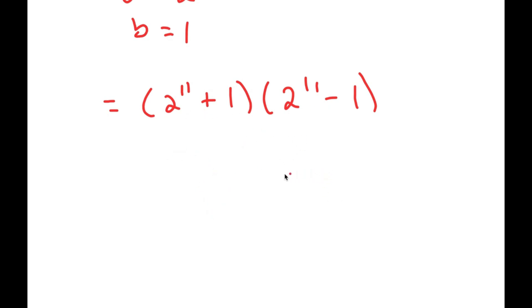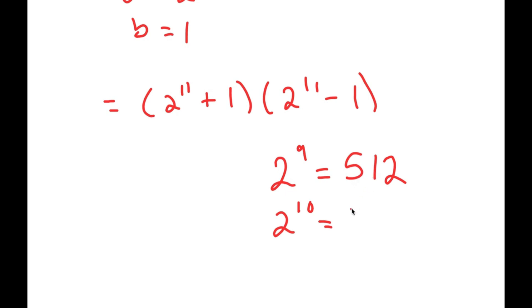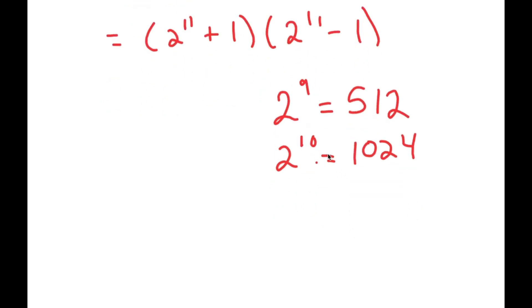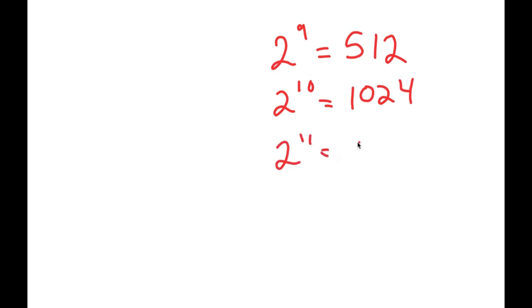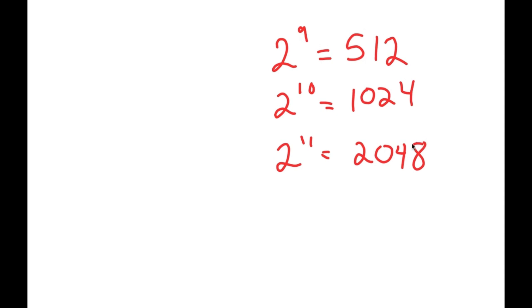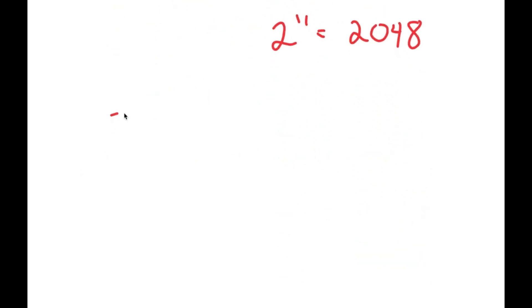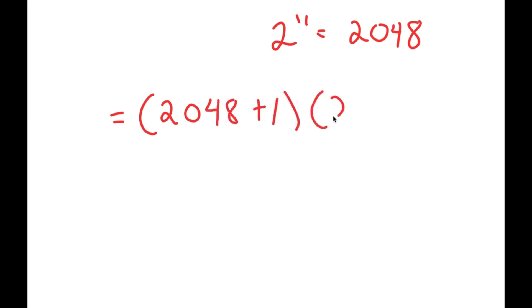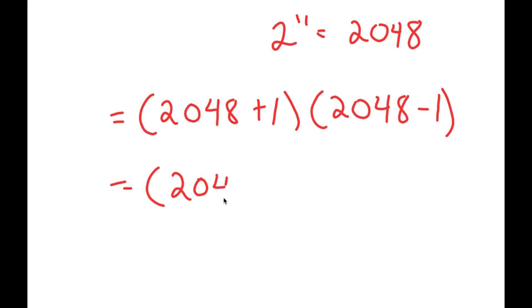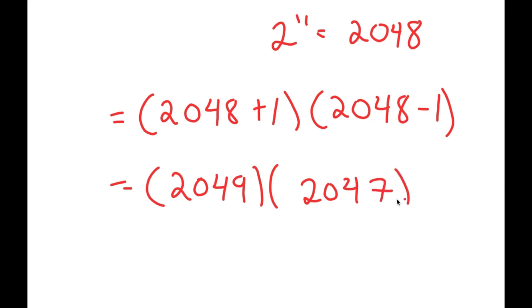What is 2 to the power of 11? Well, 2 to the power of 9 is 512. 2 to the power of 10 is double of 512, which is 1024. So, 2 to the power of 11 is double of 1024, which is 2048. Now I get 2048 plus 1 times 2048 minus 1, which is 2049 times 2047.